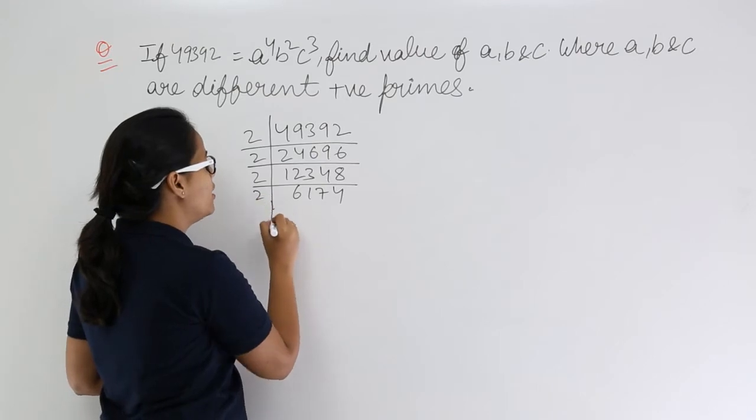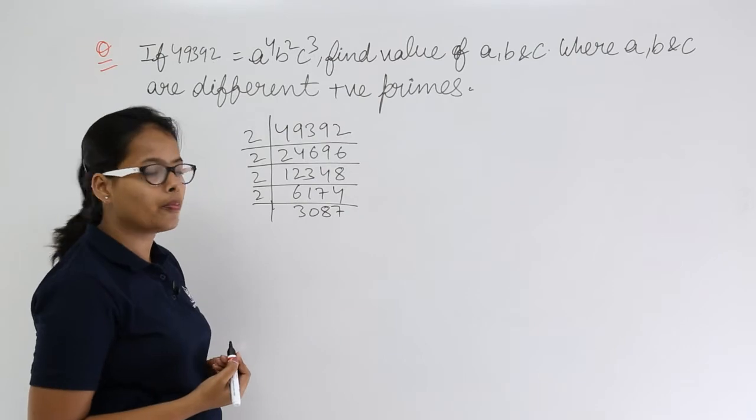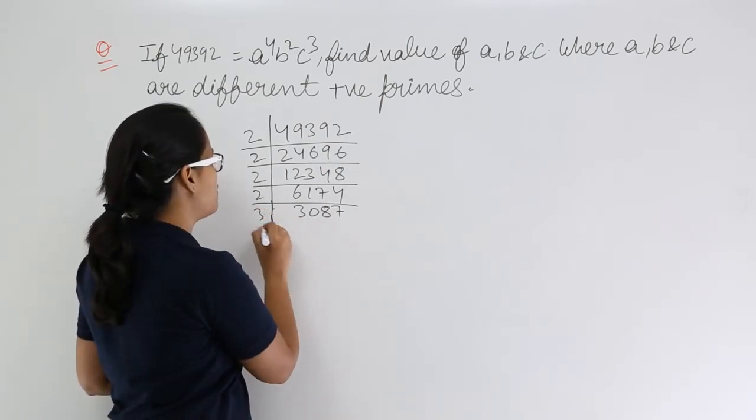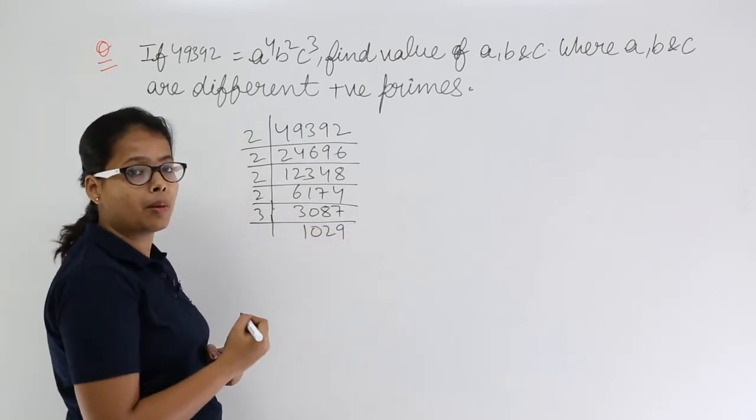After this you will get, if I am not wrong, now this number is divisible by, let's see if it is divisible by 3. This is 1029. Yes, it is divisible by 3.